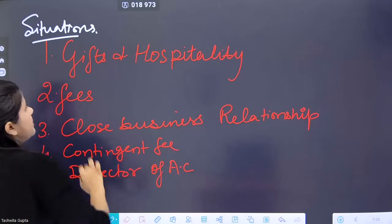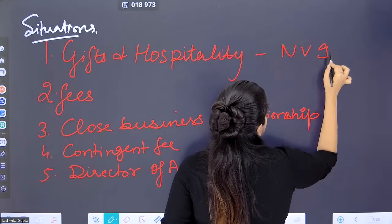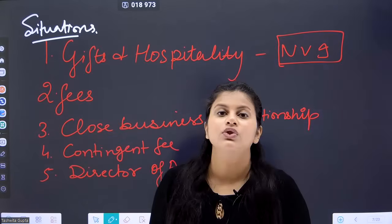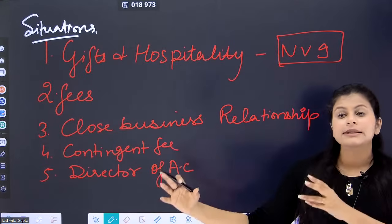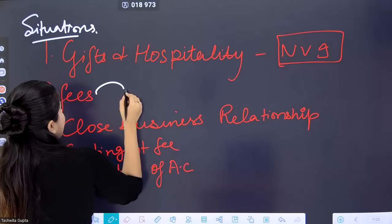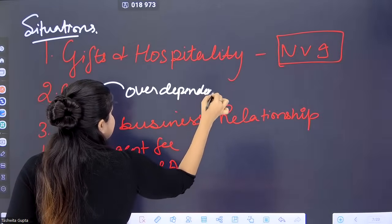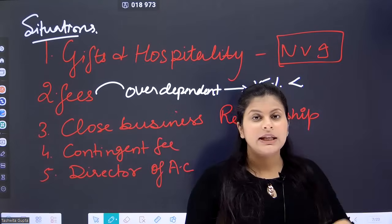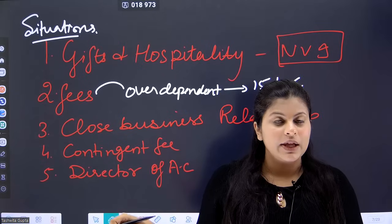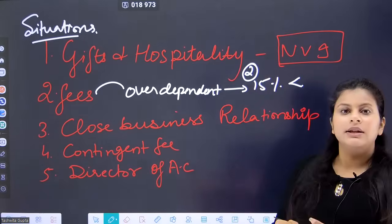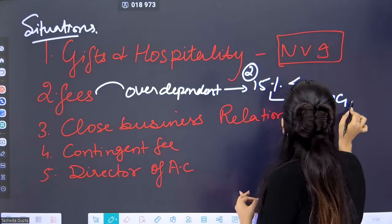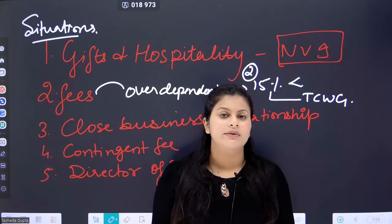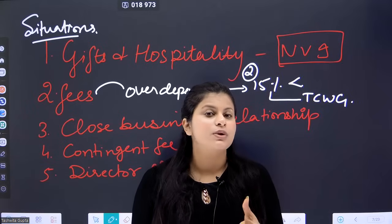Common ethical situations: gifts and hospitality — assess nature, value, and intent. If trivial, you can accept; if significant by nature, value, or intent, politely decline as it gives rise to self-interest. Fees dependence — if fees from one client is 15% or more for two consecutive years, you are over-dependent. In that case, communicate to TCWG, reduce dependence by stopping one of the services, and conduct a quality control review.